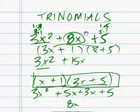x plus 1, 3x plus 5 is the factoring of 3x squared plus 8x plus 5.